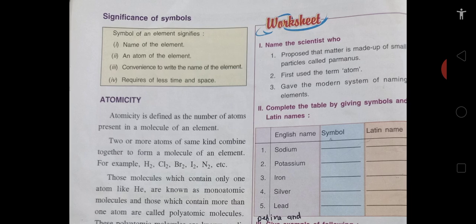Now we come to the significance of these symbols. When we write any symbol, say H, it represents first the name of that element. It also tells us one atom of that element — H means one atom of hydrogen. It is also very convenient to write the name of an element in its short form, requiring less time and space. So a symbol represents the name of an element, represents one atom of an element, is convenient to write, and requires less time and space.